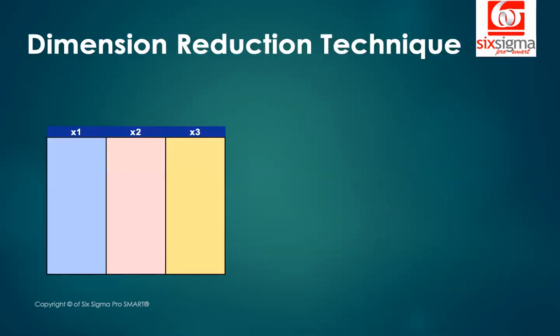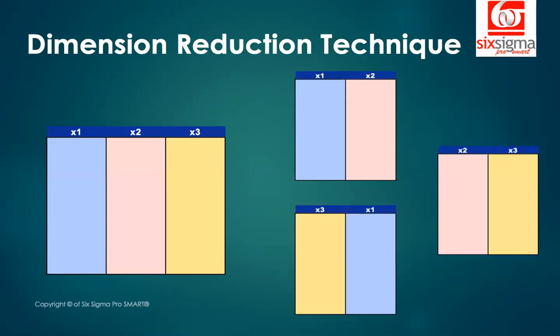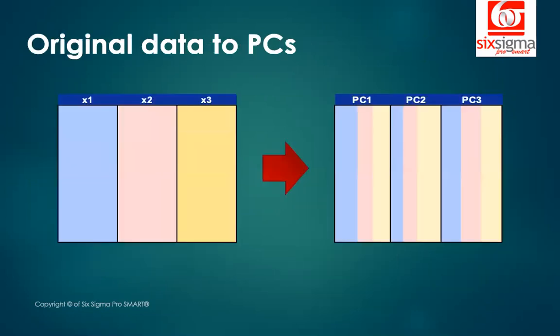We talk about principal component analysis as a dimension reduction technique, and often people think of dimension reduction as simply dropping variables. But it actually is not the case — you don't just simply drop a variable in principal component analysis.